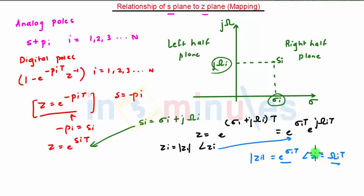Three observations can be made. First observation: consider sigma_i < 0. In this condition, the analog pole si will lie on the left half of the s-plane.